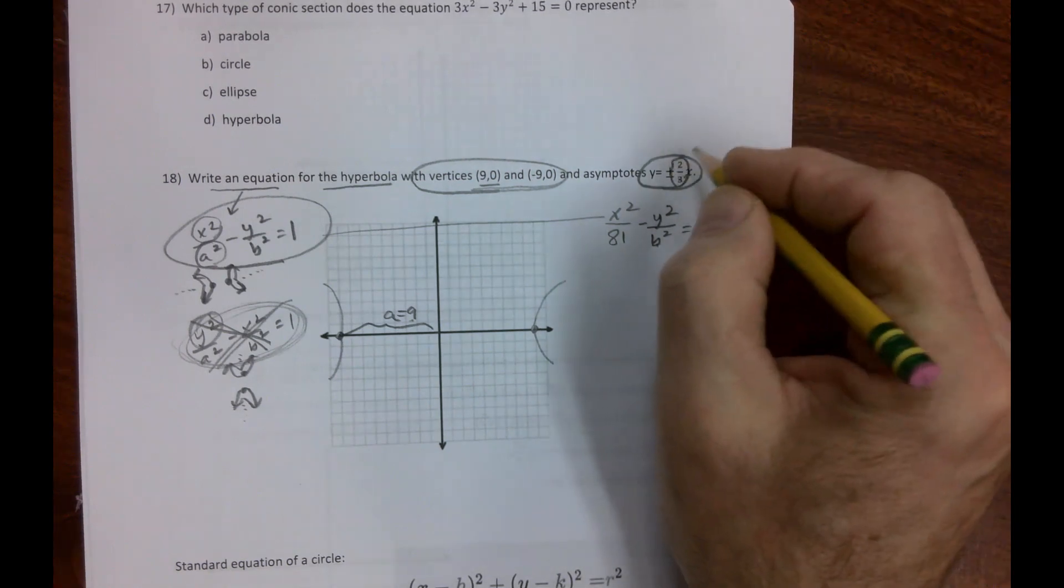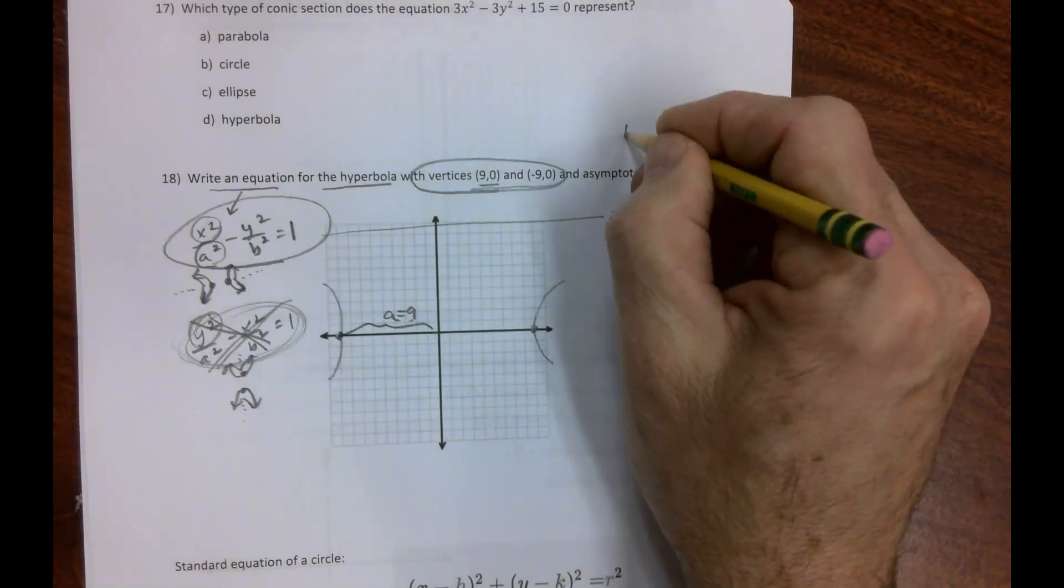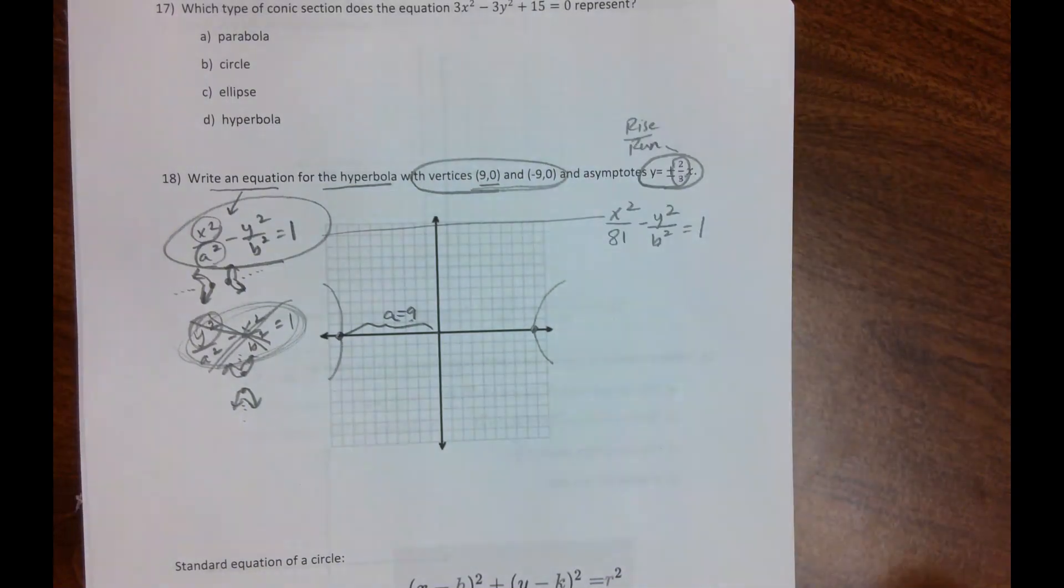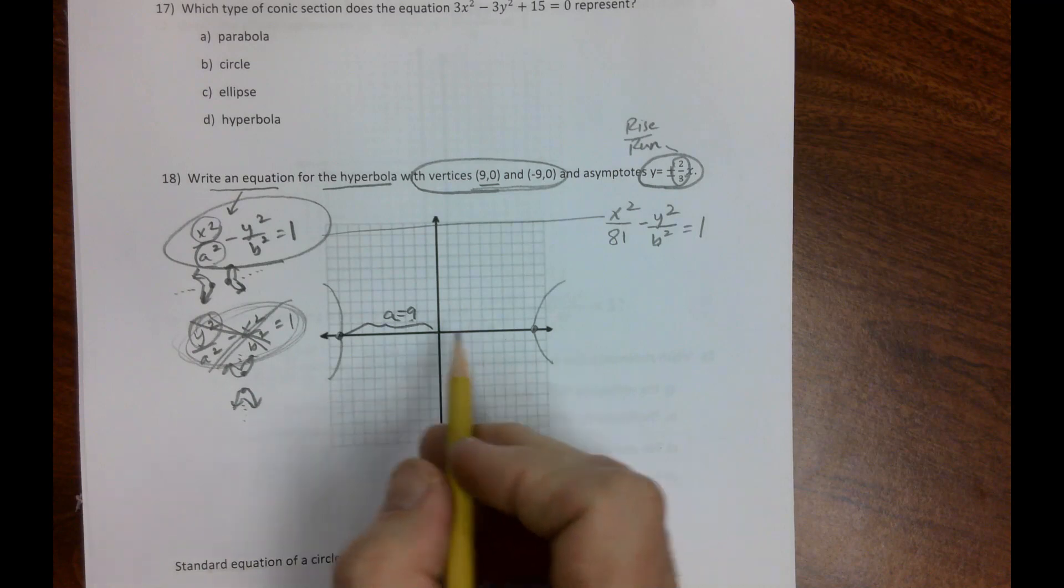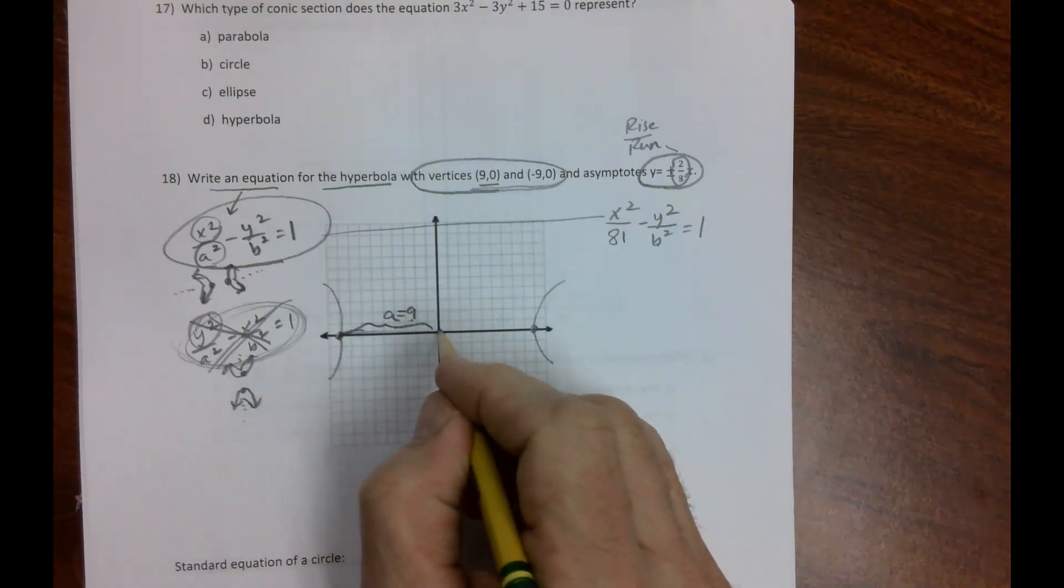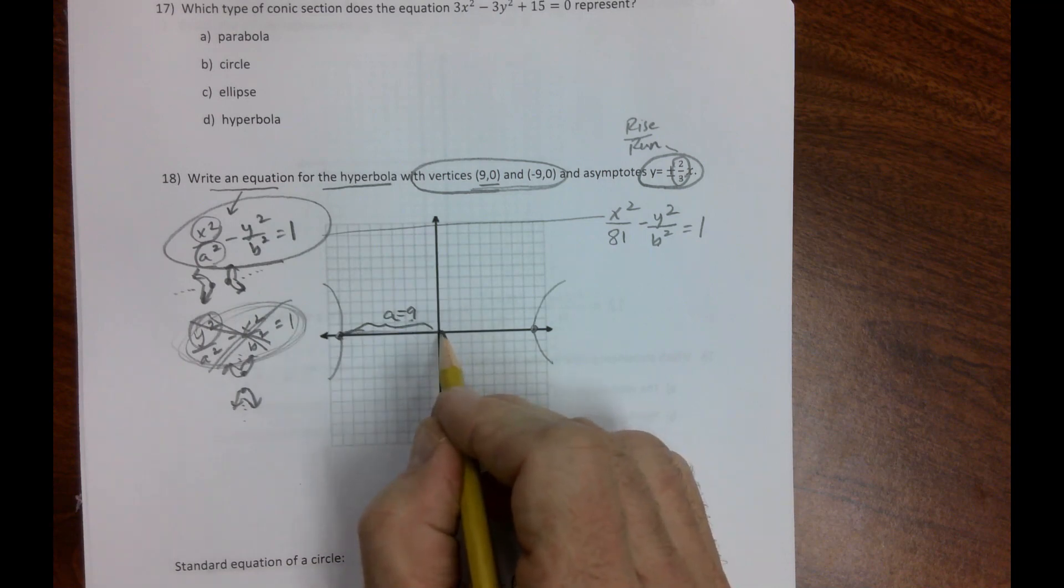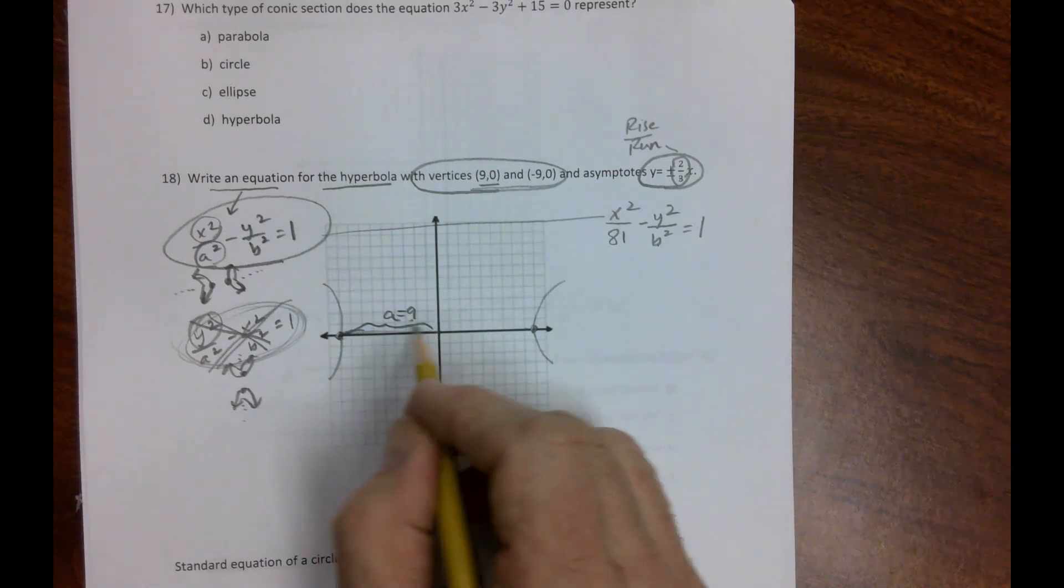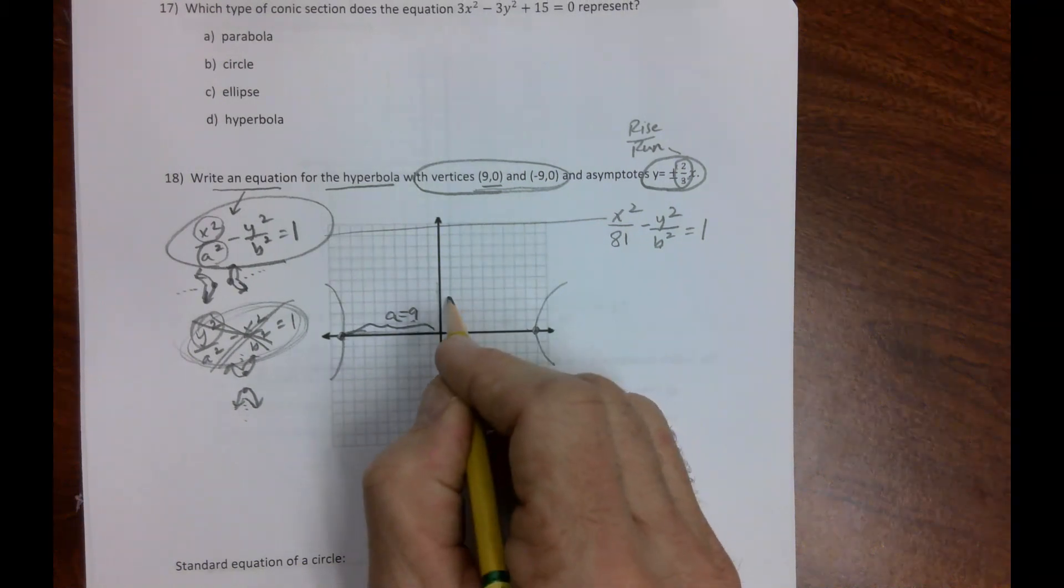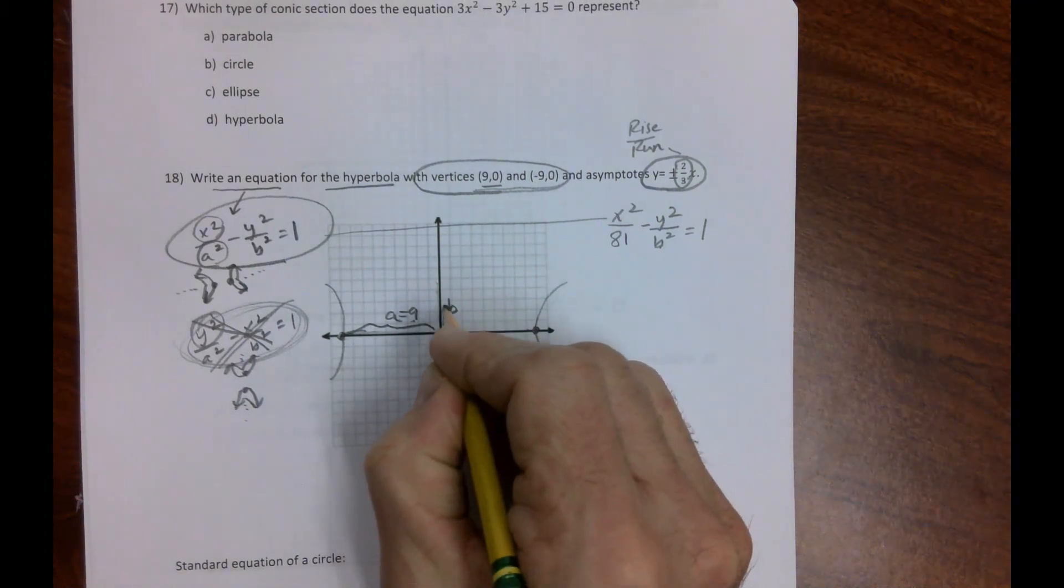Don't forget this is our slope, and slope is always rise over run. Notice this is our run. If we build our box, we'd go 9 this way or 9 this way, but we need to figure out what our rise is.